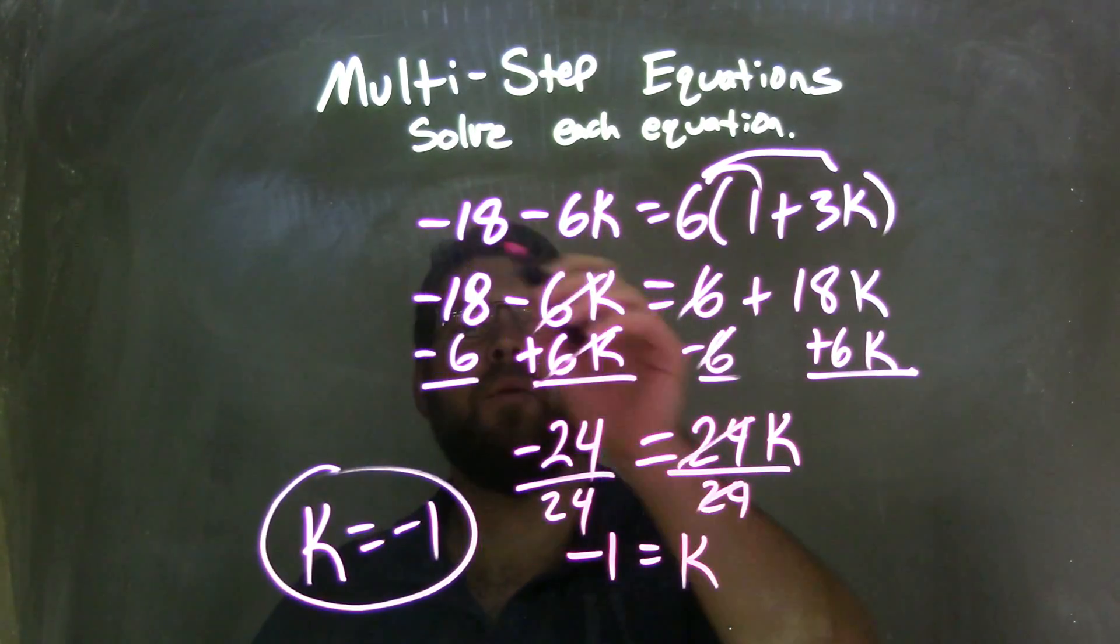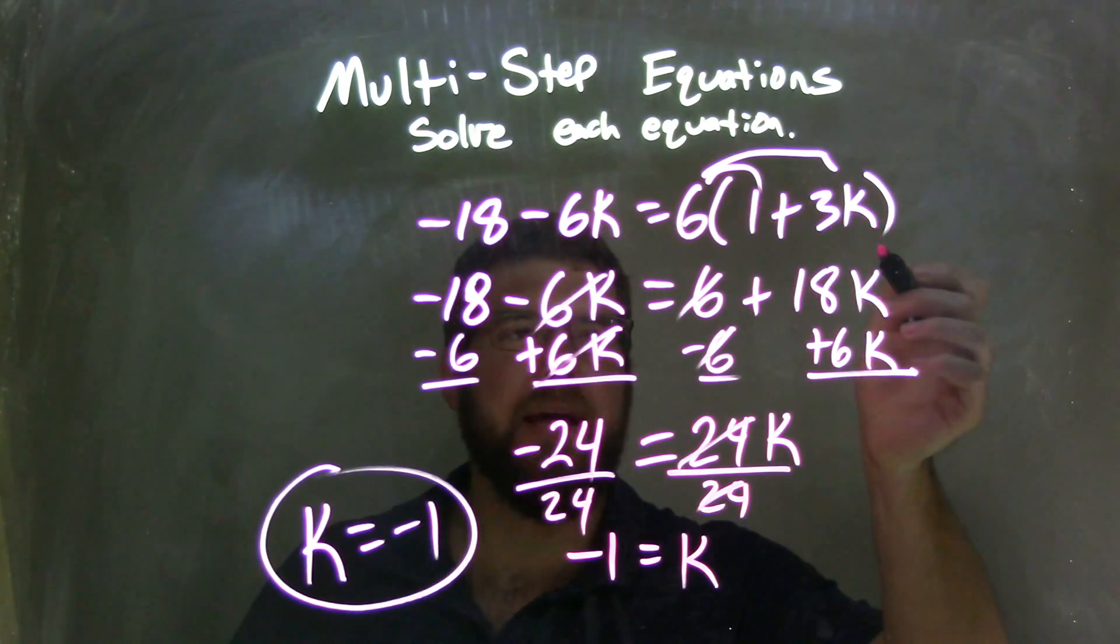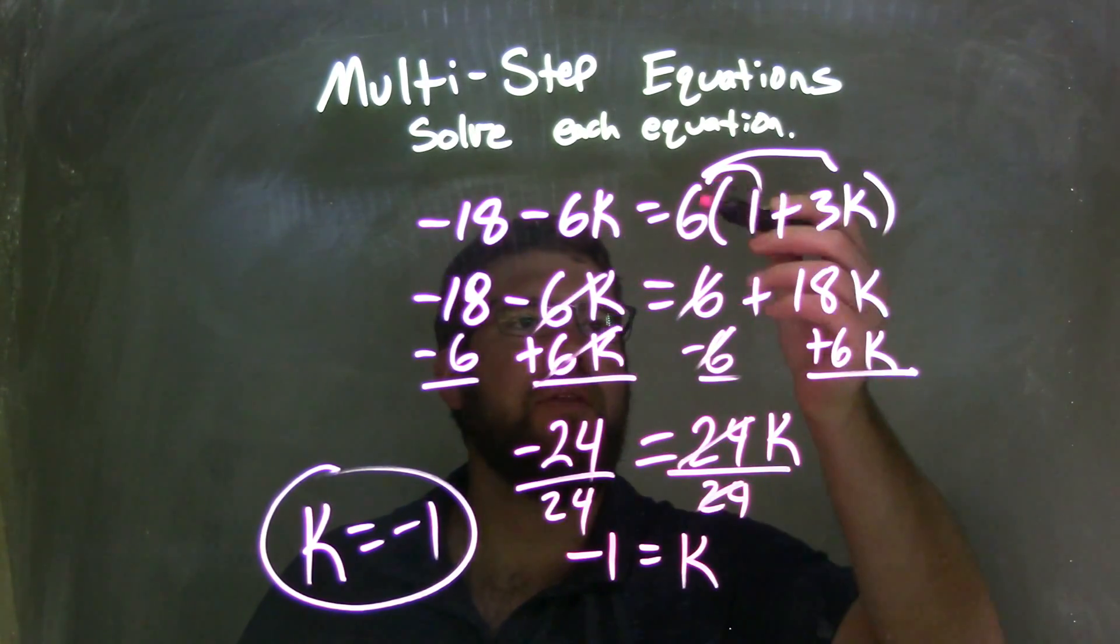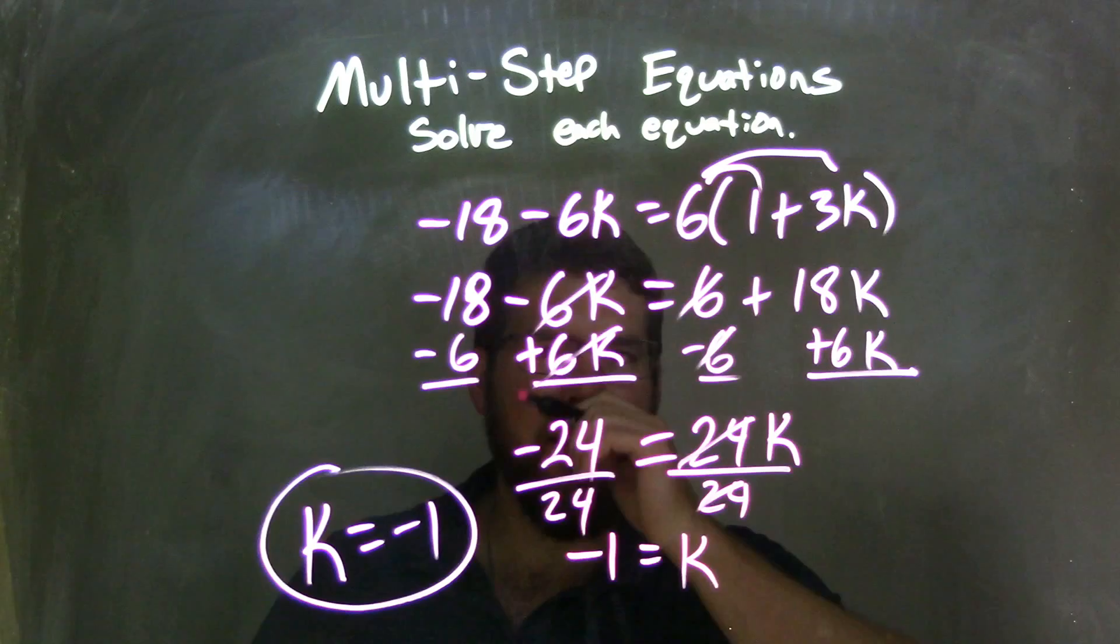Let's recap. We start with negative 18 minus 6k equals 6, times, in parentheses, 1 plus 3k. I distributed the 6 across inside the parentheses first: 6 times 1 is 6, and 6 times 3k is 18k.